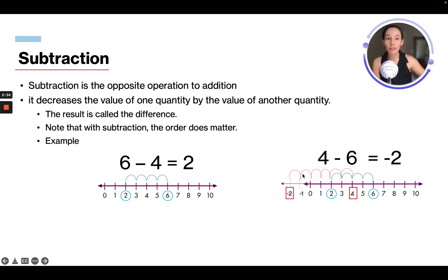However, if it's 4 minus 6, we're gonna start at 4 and we're gonna go back 6: 1, 2, 3, 4, 5, 6, we're at negative 2. So as you can see, the order does matter with subtraction, the way that the equation is written.